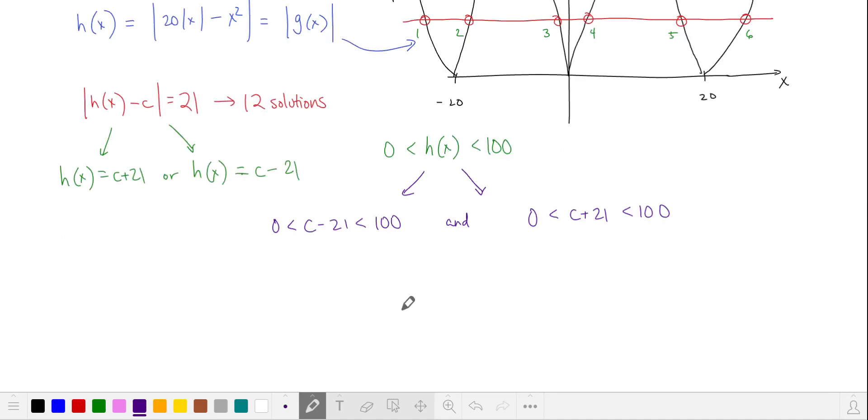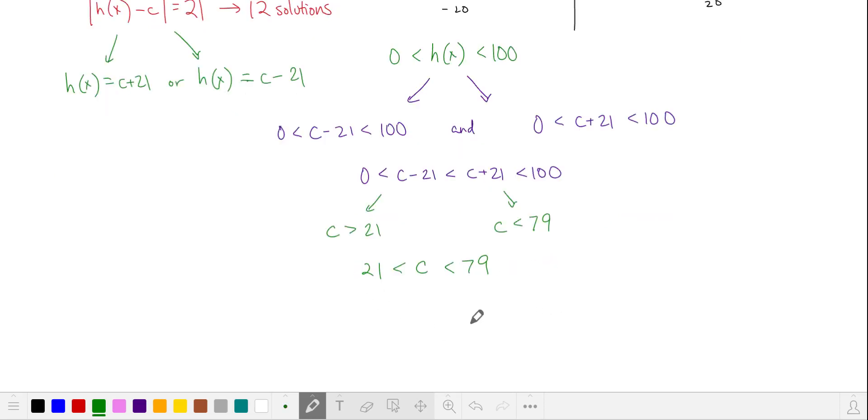Let's substitute. Let's combine our chain inequalities and solve for c. So c consists of integers between 21 and 79. This gives us 57 solutions for c.